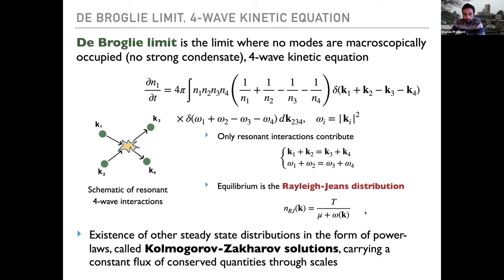Beyond equilibrium solutions, you can also seek out-of-equilibrium solutions, known in this field as Kolmogorov-Zakharov solutions. These are interesting because they are out-of-equilibrium steady-state solutions that carry a flux of energy or other conserved quantities through the scales of the system.